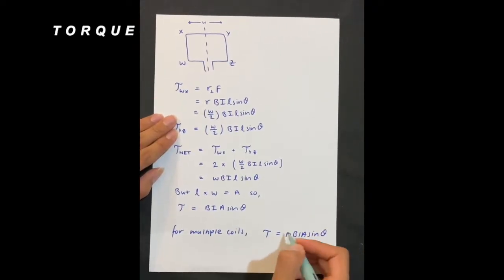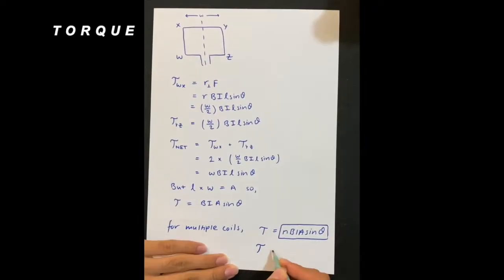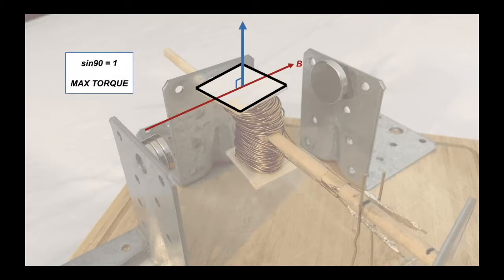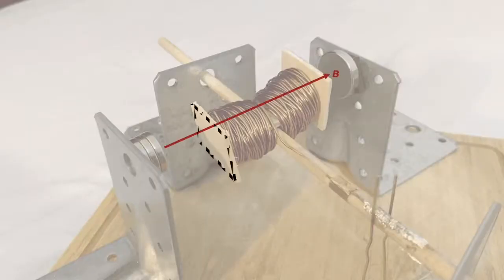After deriving its formula, we can see that torque is dependent on the angle between the magnetic field and the plane of the coil. Hence at this position, where theta is equal to 90, we can see that the torque will be a maximum, and it will decrease to zero every quarter turn when the plane of the coil becomes parallel to the magnetic field.